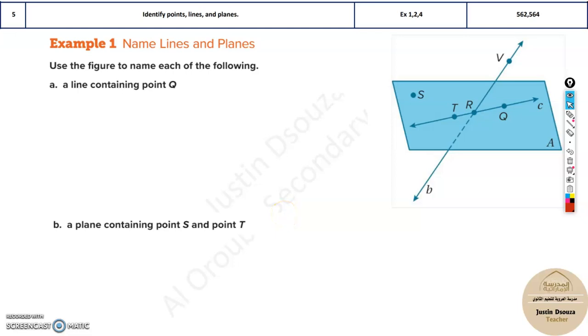Moving on to the next topic, it is again on identifying points, lines, and planes. Here the figure is given and we need to solve for the following. They are asking us to name a line containing the point Q. Whenever they mention such things, first see where is the point Q. It's over here.